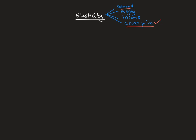Elasticity measures the sensitivity we face when the price of a product increases or decreases. Quick recap from the price elasticity of demand: the formula used was percentage change in quantity demanded over the percentage change in price.